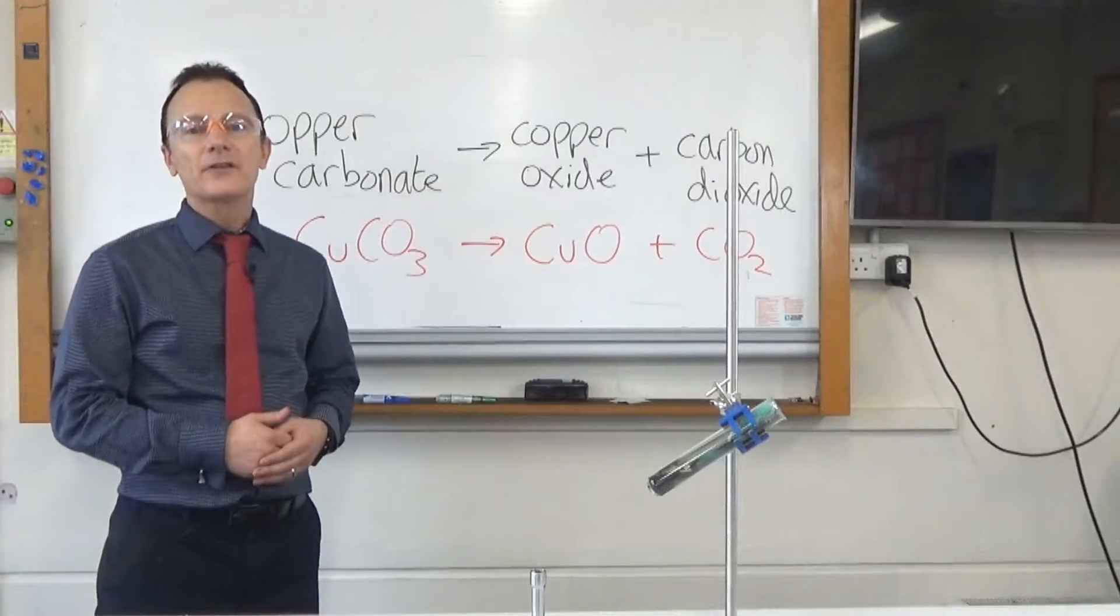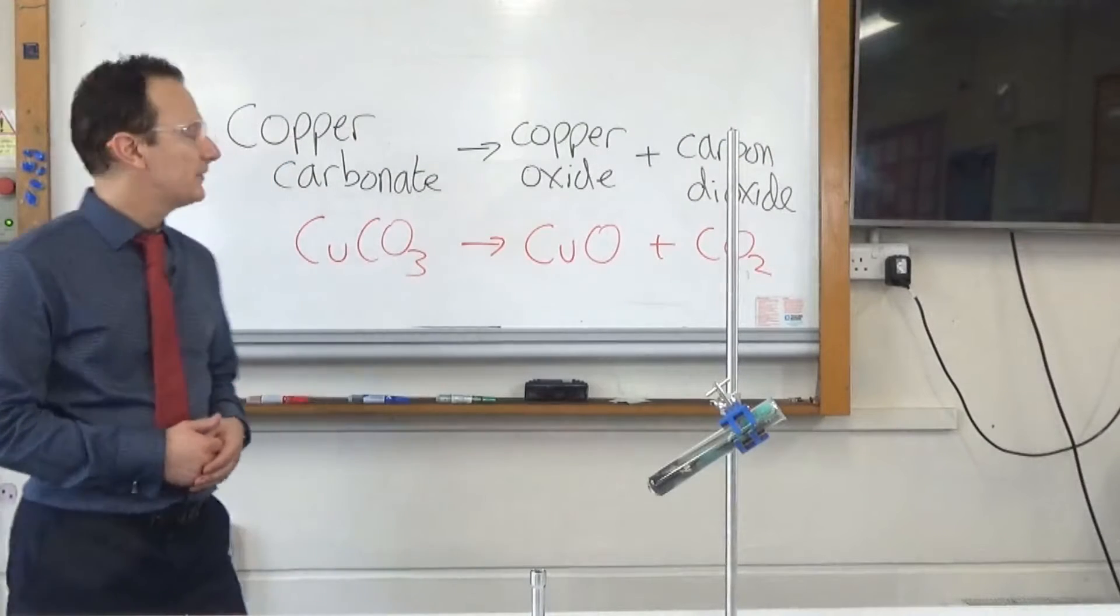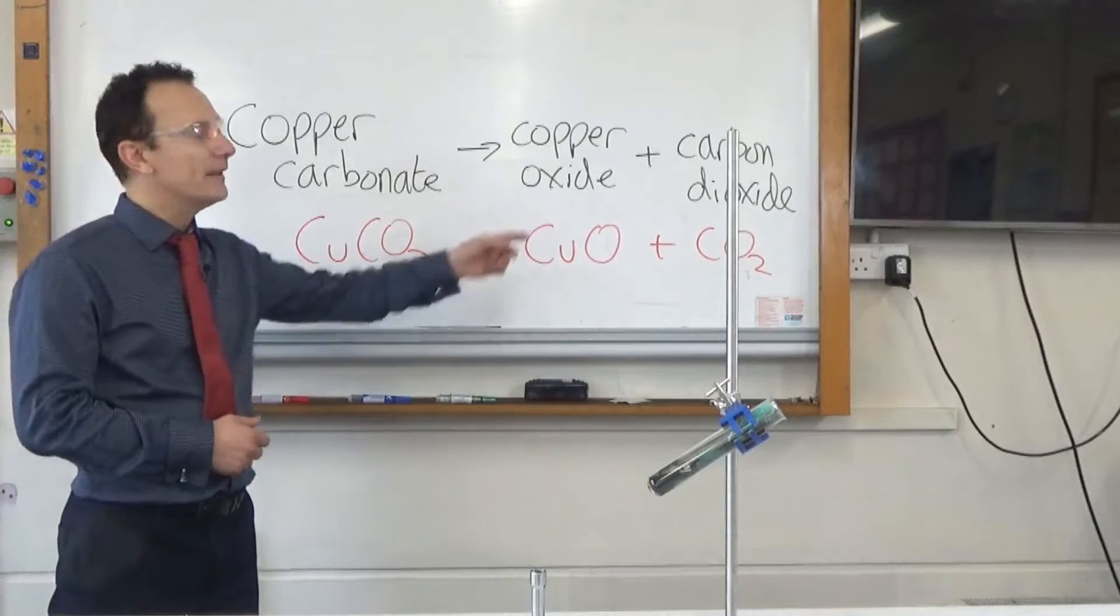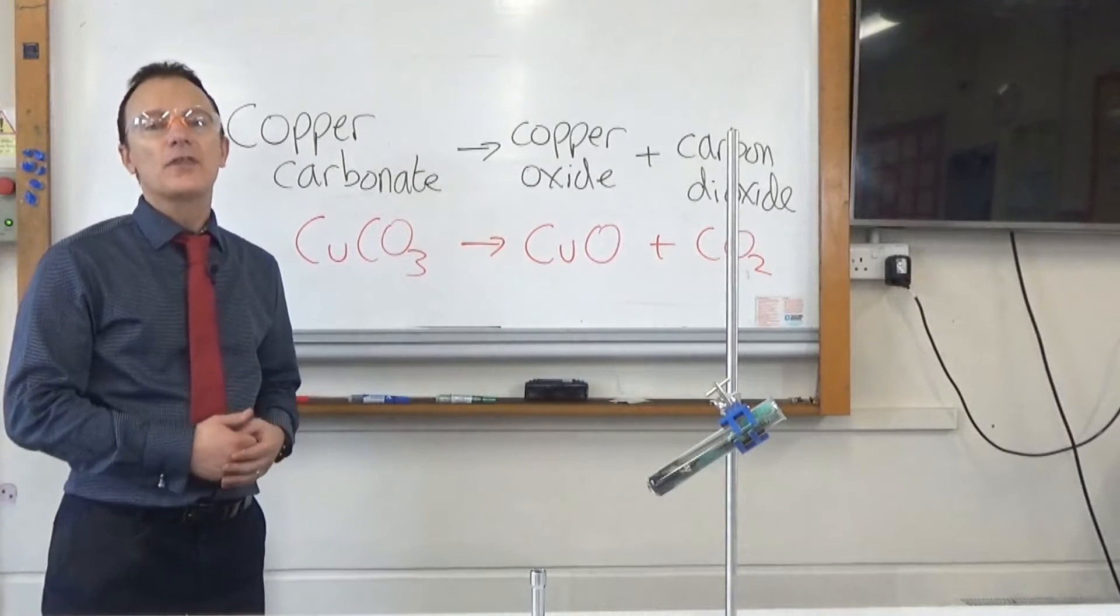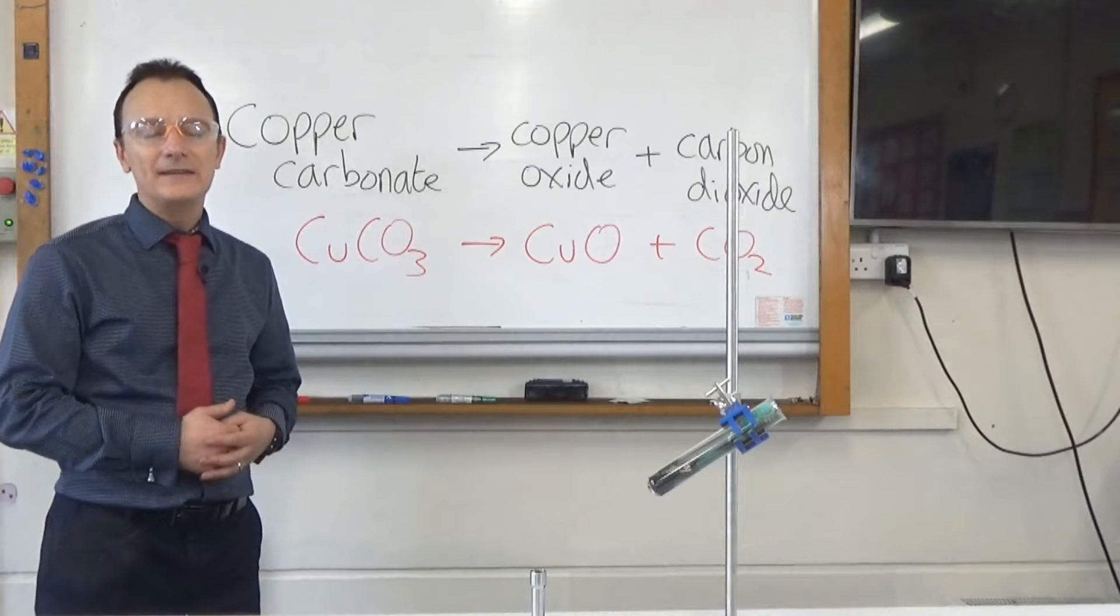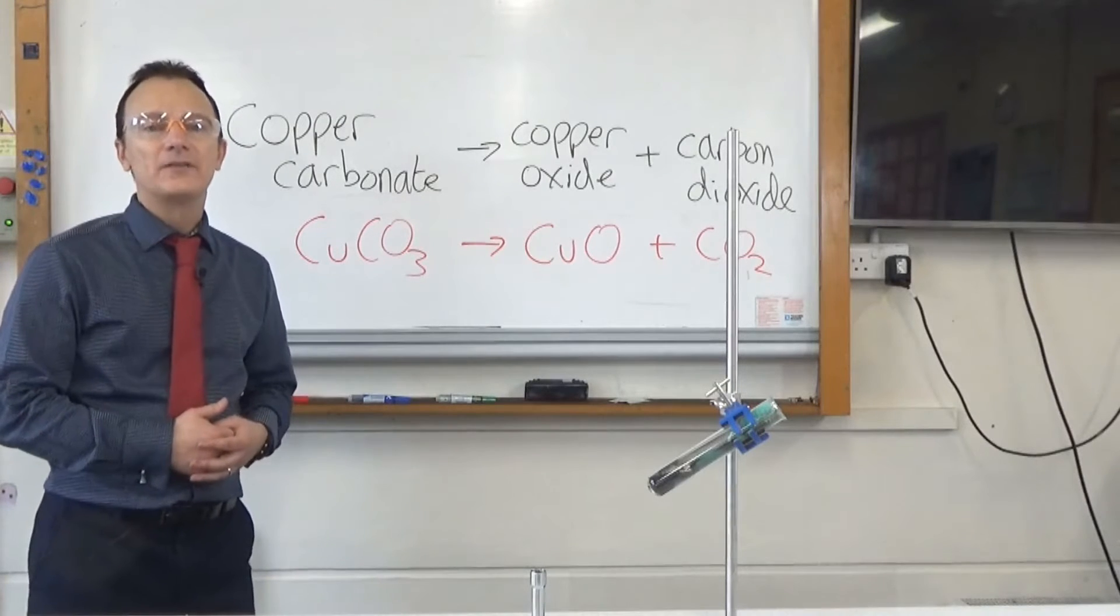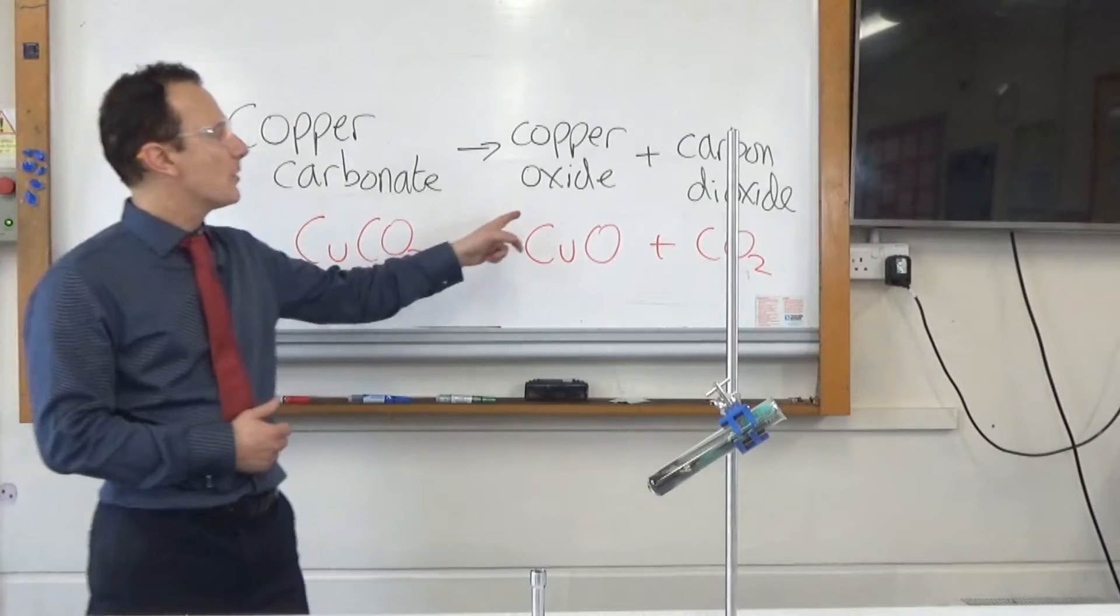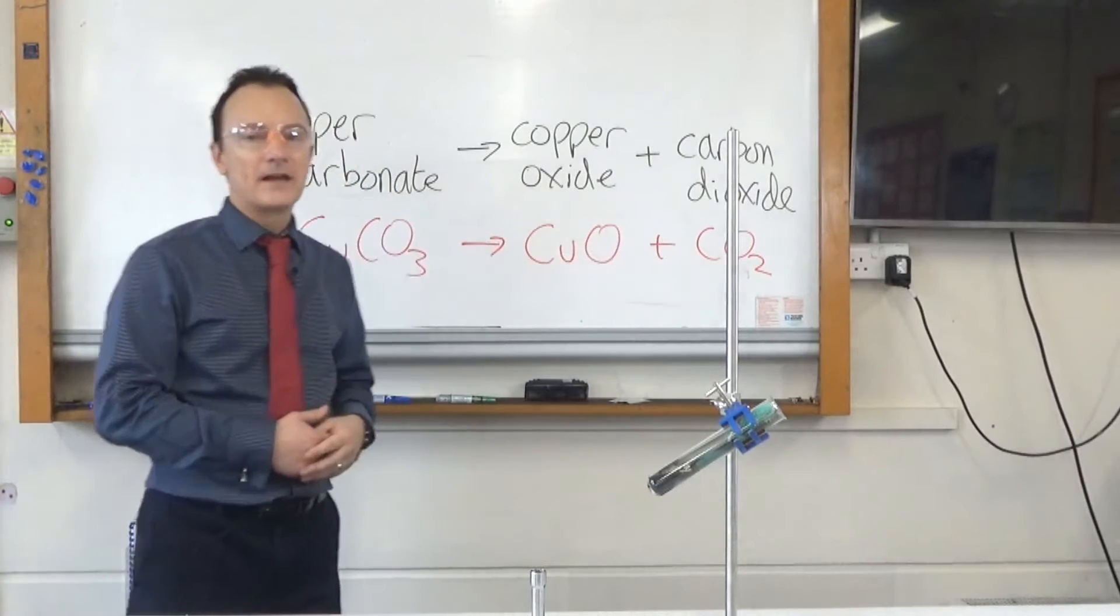So if you think about the reaction that's just happened we've been using heat on the green copper carbonate and it's changed into the black copper oxide. Now this is called a thermal decomposition reaction. Thermal meaning using heat and decomposition means to break something down and that's because the copper carbonate has broken down into copper oxide and carbon dioxide.